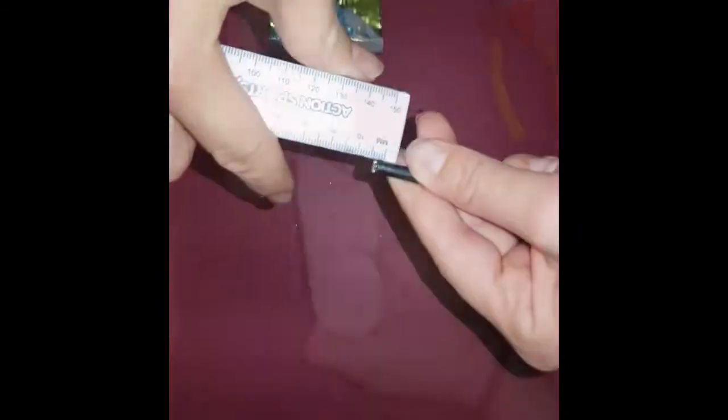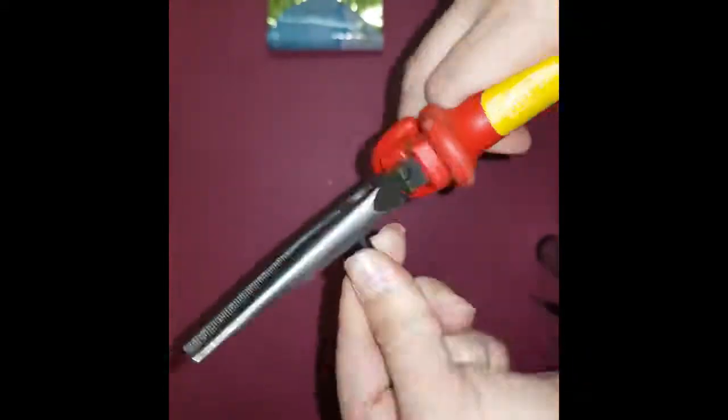Now it is time to strip our coaxial cable so that we have 2mm of the inner braiding and 2mm of the inner conductive cable.